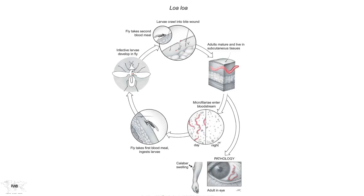The adult worm ingests host material, processes it, and produces microfilaria, which then find their way into the blood — because if that didn't happen, another Chrysops couldn't come along and pick up the infection. So somehow the microfilaria has to work its way from the adult female in the subcutaneous tissue to the blood supply, and it does so essentially by brute force, the way almost all other nematodes behave. The adult worm continues its migratory path and keeps moving.